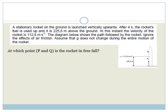It says a stationary rocket on the ground is launched vertically upwards. After four seconds, the rocket's fuel is used up, and it is 225.6 meters above the ground. At this instant, the velocity of the rocket is 112.8 meters per second. The diagram below shows the path followed by the rocket. Ignore the effects of air friction, and assume that G does not change during the entire motion of the rocket.